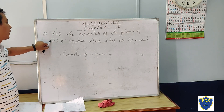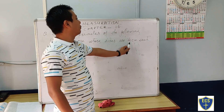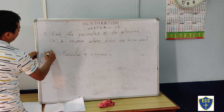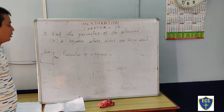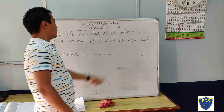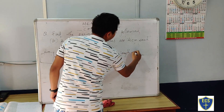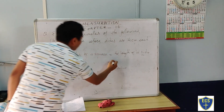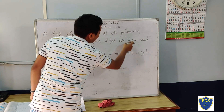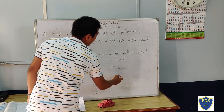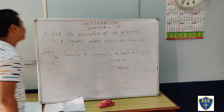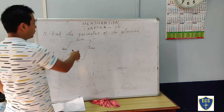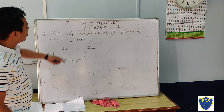Next question, number B: a square whose sides are 4 cm each. The formula for perimeter of a square is 4 into length of a side. The length of each side is 4 cm, so: 4 into 4 — four fours are 16 cm.